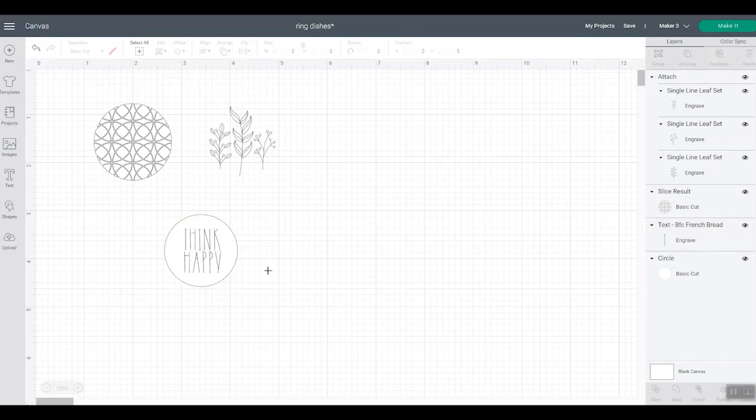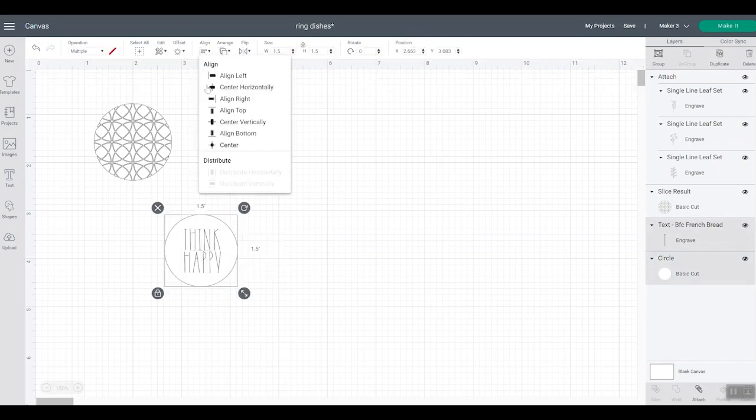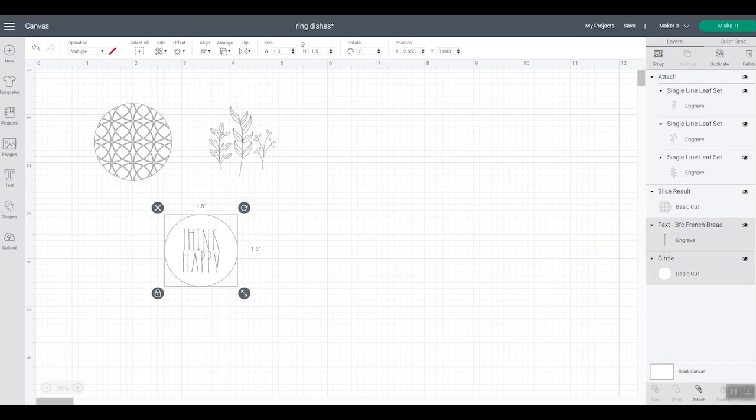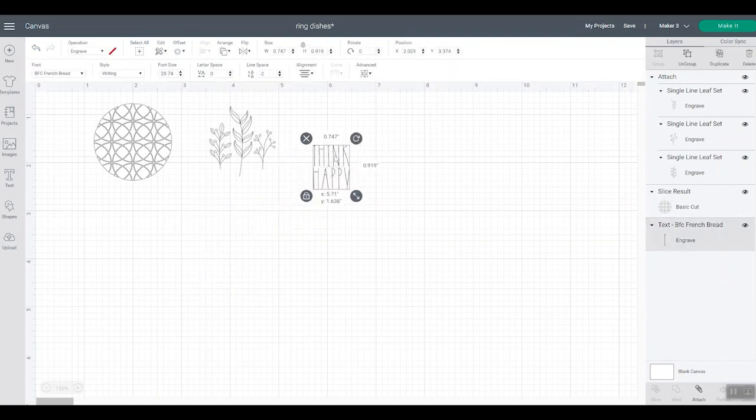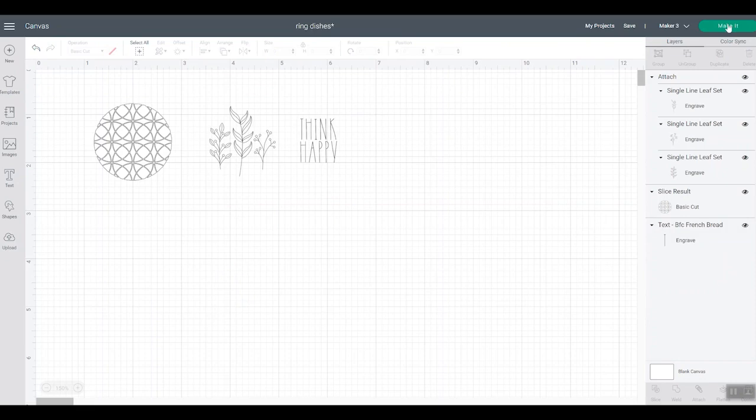And then I'm going to pick both of these and I'm going to align center just to see everything looks pretty good. So I'm going to go ahead and delete the circle off. We don't need the circle at all. We are fine with just the writing. And so now I'm going to click make it.